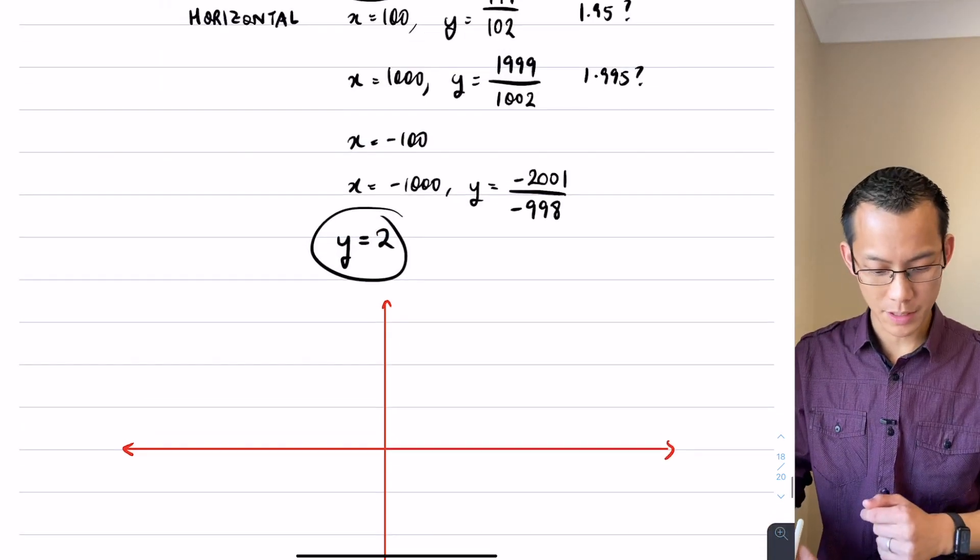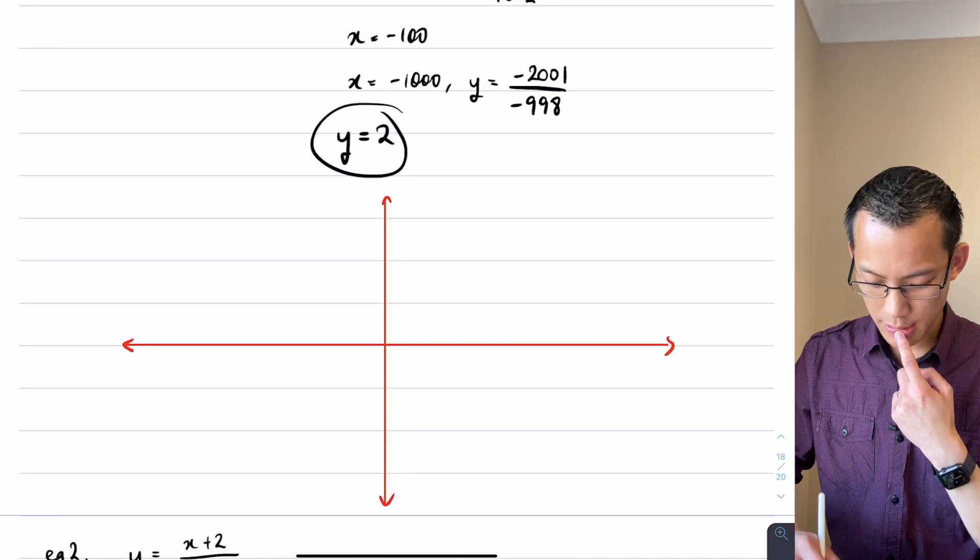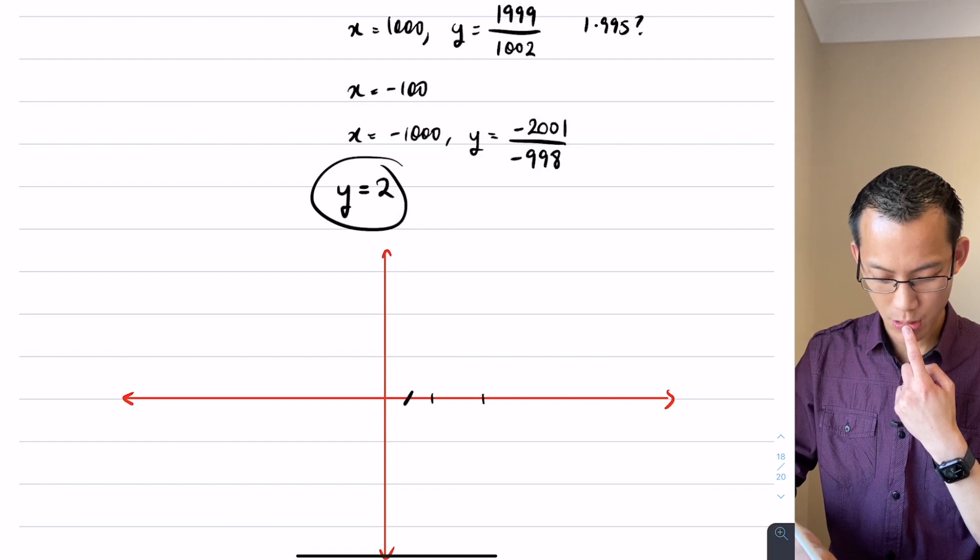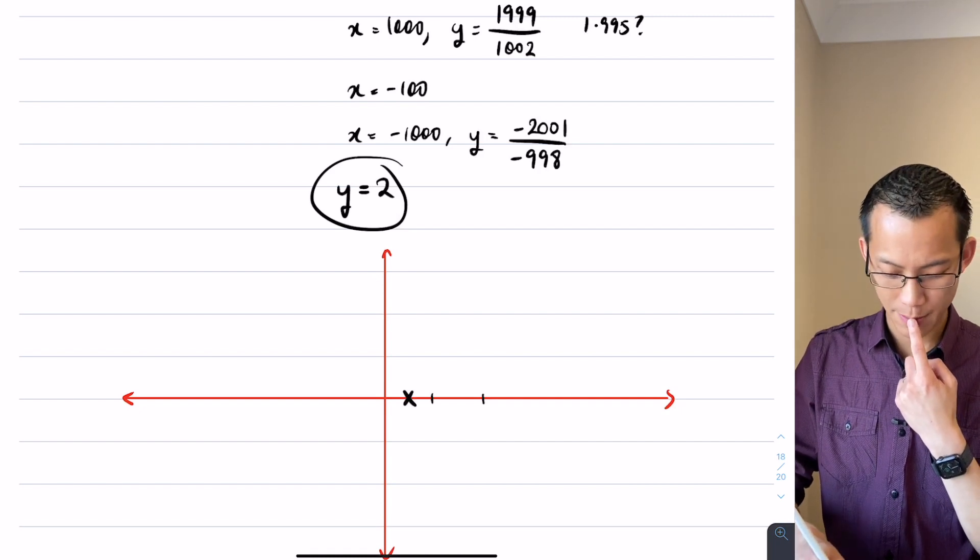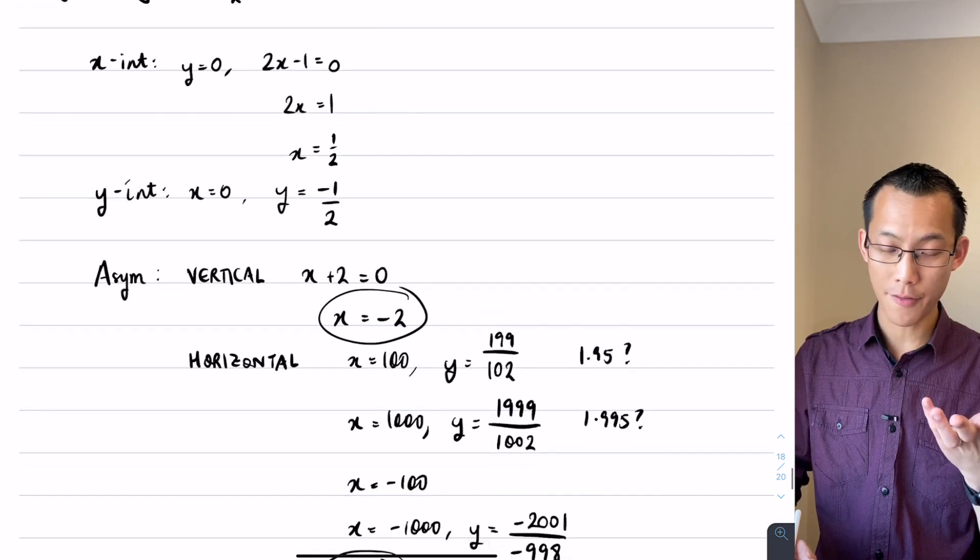So we started with our intercepts, didn't we? So we said intercepts were x equals a half. Let's put some spots like 1 and 2 here, which made x equals a half right there. I better label it as well. A half.